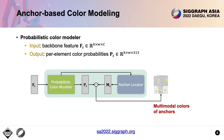Here is a diagram of anchor-based color modeling. Given the tokenized backbone feature, we employ the probabilistic color model to predict the per-pixel color distribution ps, which is denoted by the probabilities of quantized colors of the gamut. The learned deep features are then exploited by the anchor locator to generate a mask ms, indicating the location of selected anchors. With ps and ms, we can get the multimodal colors of the anchors.